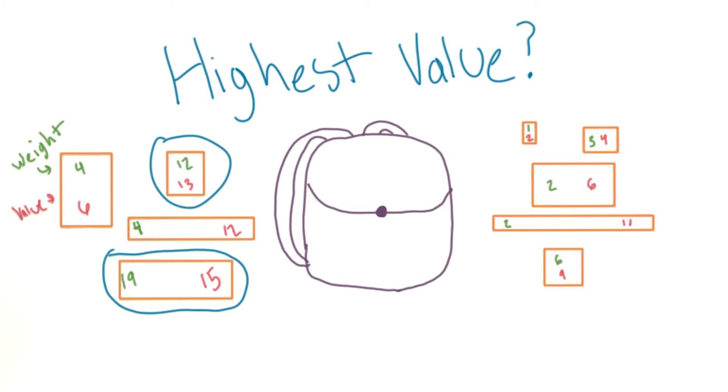But what if putting the two elements with the highest values hit the weight limit, but putting all the other elements in together would actually fit and have a higher value? There aren't a lot of actual knapsacks in computer science, but this problem describes an optimization issue that crops up often.